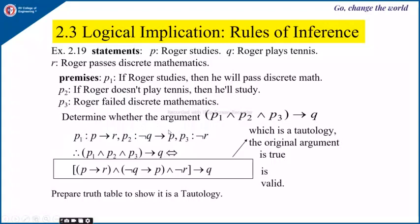Now, when P1 is true, P2 is true, and P3 is true, we need to check whether we can arrive at Q. The expression P1 and P2 and P3 implies Q is equivalent to: (P implies R) and (not Q implies P) and (not R) implies Q. We have replaced P1 by P implies R, P2 by negation of Q implies P, and P3 by negation of R implies Q. Preparing the truth table shows this is a tautology; therefore the original argument is valid.